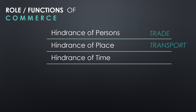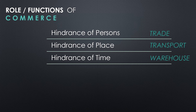The next hindrance is the hindrance of time. Some goods are produced at a particular time in a year but consumed throughout the year — like rice and wheat, produced in one season but consumed all year round. Nowadays we even get certain fruits and vegetables throughout the whole year, which was not possible decades back. This is because of warehousing, which removes the problem of time gap. Goods can be kept safely in warehouses until demanded, and different warehouses serve different goods — like cold storage for fruits and vegetables, and fireproof warehouses for inflammable goods.